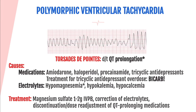Torsades de pointes, also known as polymorphic ventricular tachycardia, will likely appear on the CCRN exam. Medications that can prolong the QT include amiodarone, haloperidol, procainamide, and tricyclic antidepressants such as amitriptyline or nortriptyline. For tricyclic antidepressant overdose, give bicarbonate — it helps treat metabolic acidosis and cardiac complications.